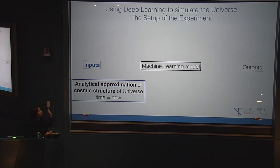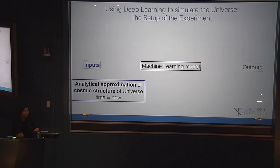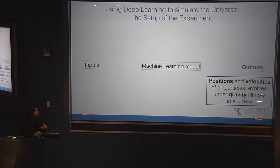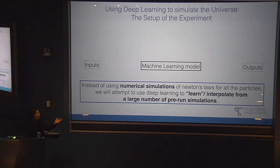Here's our experiment: we use deep learning to simulate the gravity-only universe with matter particles including dark energy. The input is an analytical approximation of the cosmic structure — what theorists can write down with pen and paper quickly. The output is positions and velocities of all the particles evolved under gravity after some number of years to now. Instead of running numerical simulations of Newton's law for all the particles, we attempt to use deep learning to learn or interpolate from a large number of pre-run simulations.